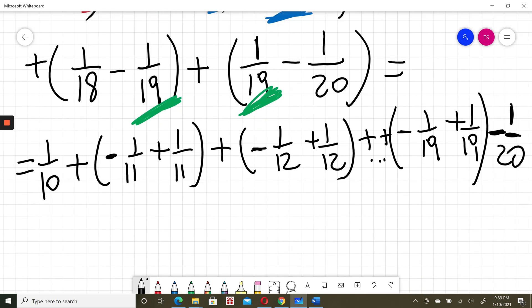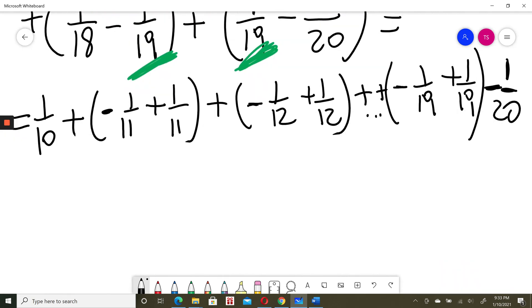And the last thing I would have just minus 1 over 20. All of those brackets would be equal to zero and the only things which I have is 1 over 10 minus 1 over 20. It's 2 over 20 minus 1 over 20. So the answer is 1 over 20.